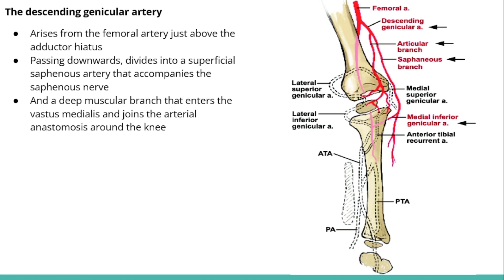The descending genicular artery passes downwards and divides into a superficial saphenous branch, which accompanies the saphenous nerve downwards, and a deep muscular branch, which enters the vastus medialis muscle and also joins the arterial anastomosis around the knee joint. Thank you, and I hope you learned something from this video.